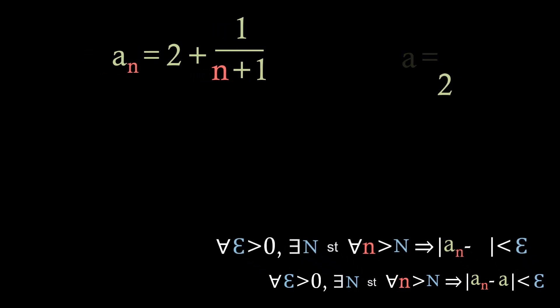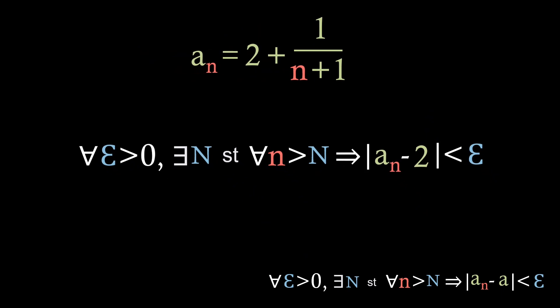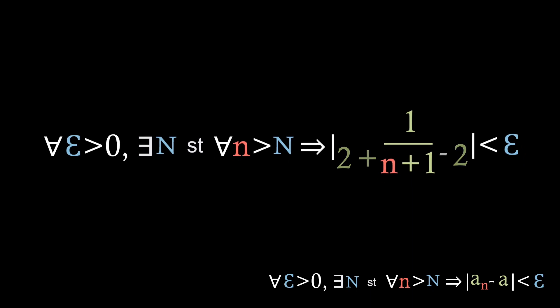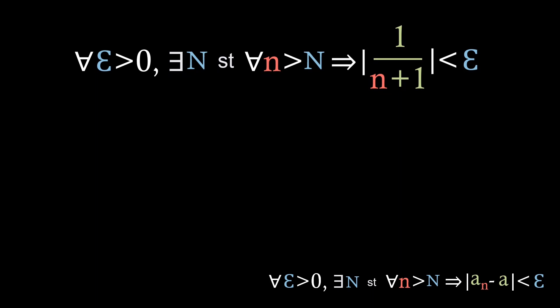So now we need to use our definition. We can start by substituting the limit in and then our sequence. We can see here that in the absolute value the 2's will cancel, so we're just left with the absolute value of 1 over n plus 1. So here's where it gets a bit more tricky. What we need to do is show that for every epsilon greater than 0 there exists this big N such that that last statement is true. So the first thing we're going to do is just let epsilon be greater than 0, and then what's left to do is find this big N.